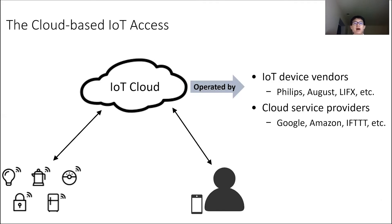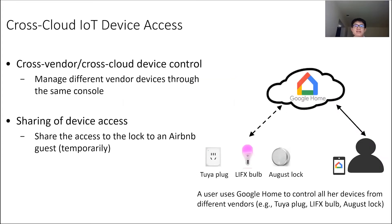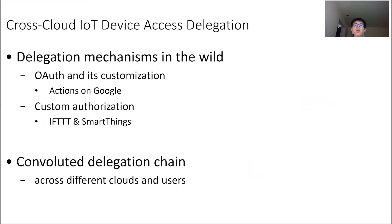The popularity of IoT gives rise to the demand for effectively managing IoT devices, which has been supported by IoT clouds operated by both device vendors and cloud service providers. Today's IoT clouds tend to provide functionalities such as cross-cloud device control and the sharing of device access in order to meet different user requirements. For example, a user might want to use one single console to manage all her devices from different clouds. Supporting these functionalities are the homegrown delegation mechanisms developed by different IoT clouds.